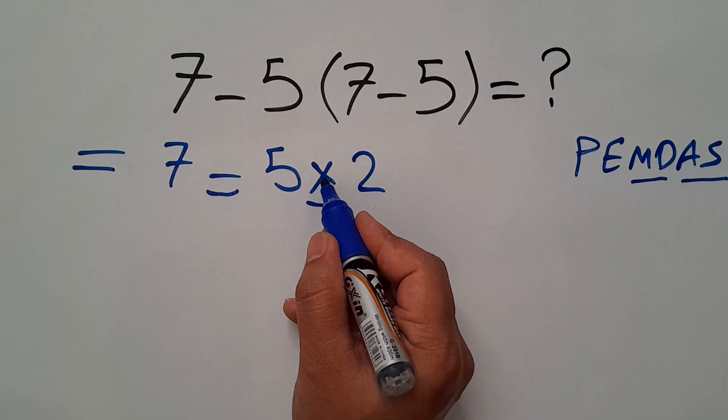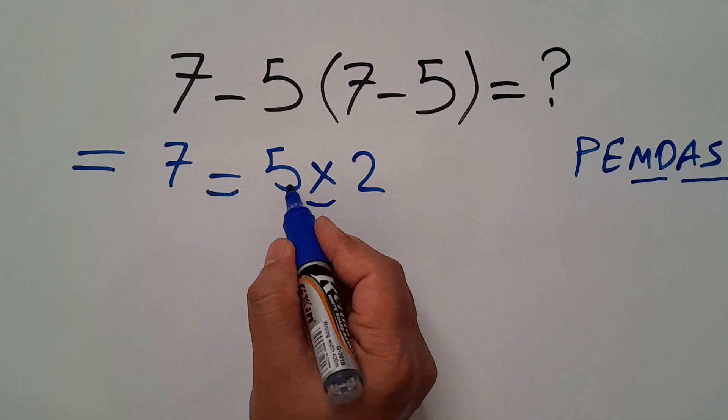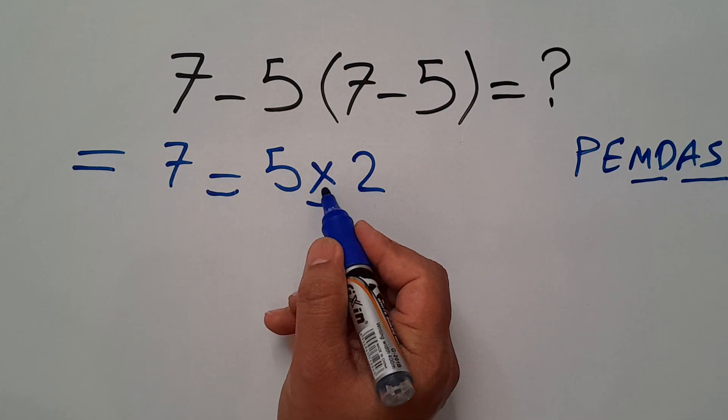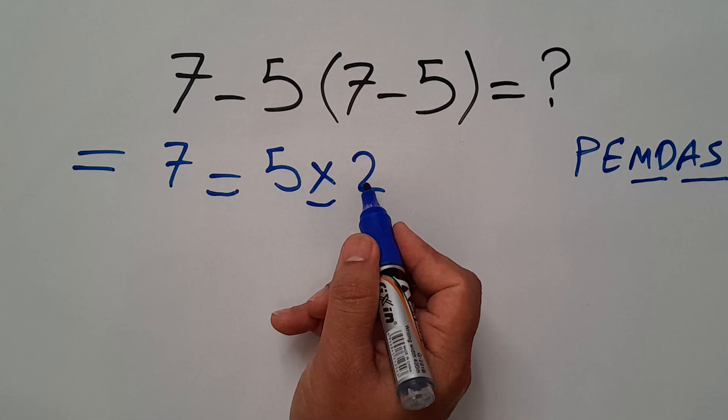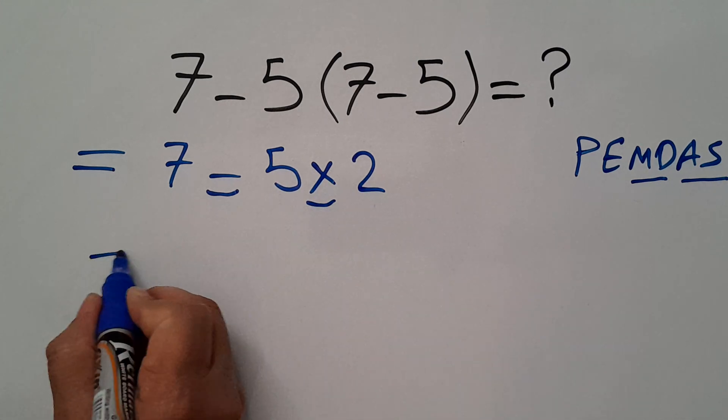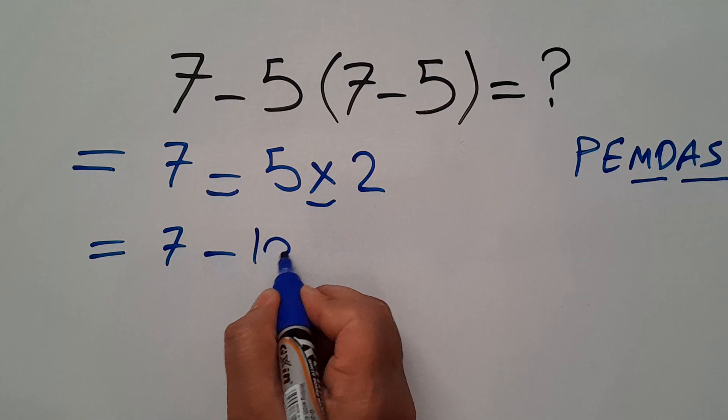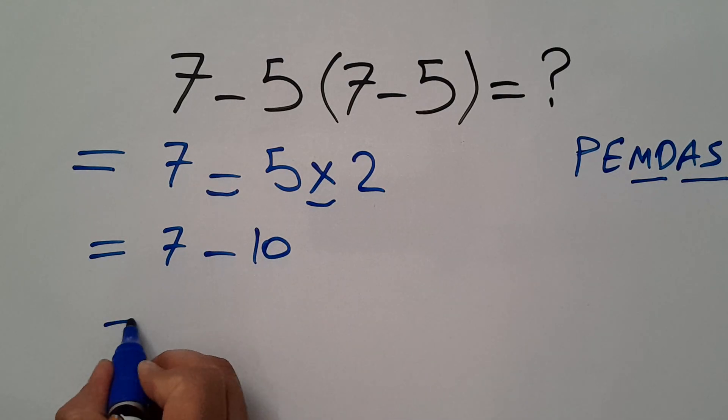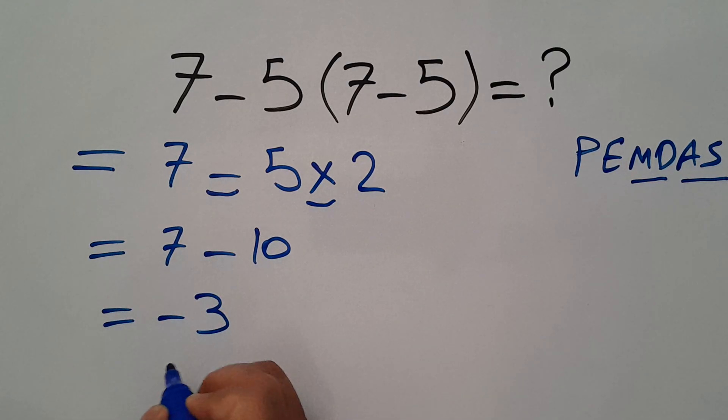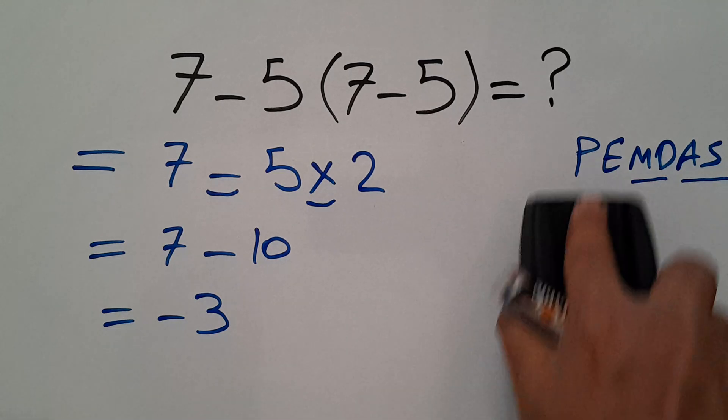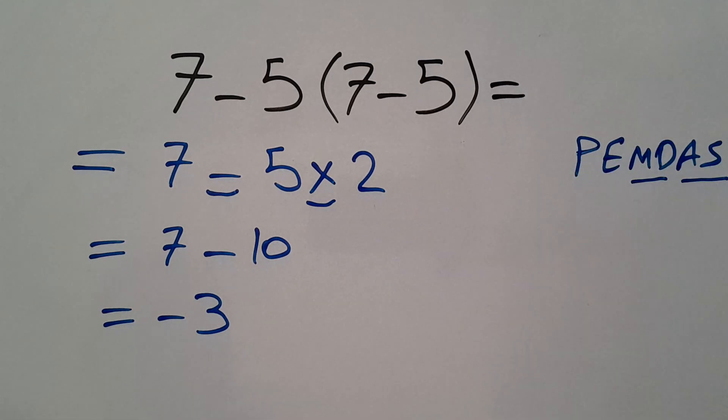Multiplication has higher priority than subtraction, so first we handle this multiplication. 5 times 2 equals 10, so 7 minus just 10, and this is equal to negative 3. So our final answer to this problem is just negative 3.